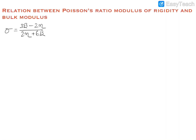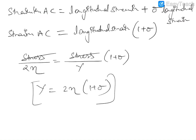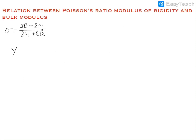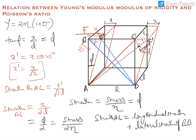Hello guys, welcome to Tesla Adventures. In this video we will derive the relationship between Poisson's ratio, bulk modulus, and modulus of rigidity. In previous sections we have already discussed that gamma is equal to 2 eta into 1 plus sigma.